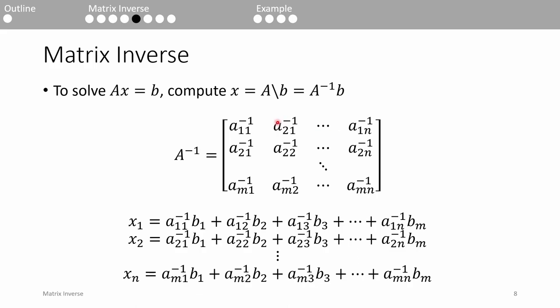We know that A inverse is given by this matrix, so if we expand out the matrices, we can write individual equations for each x as a linear combination of each b. Once again, keep in mind that m and n are equal since the A and A inverse matrices must be square.